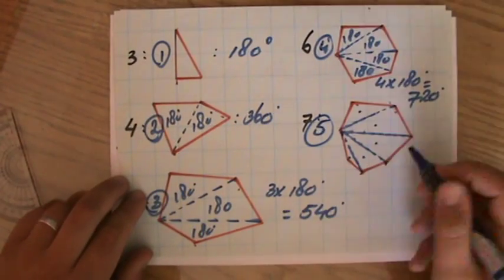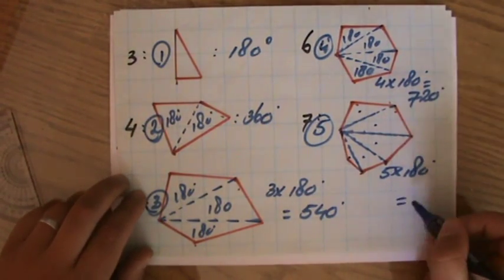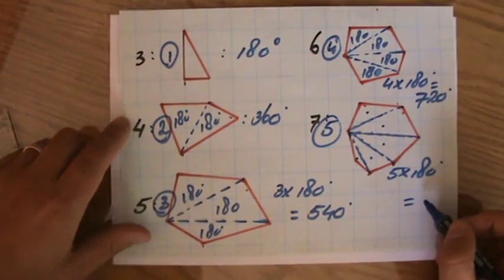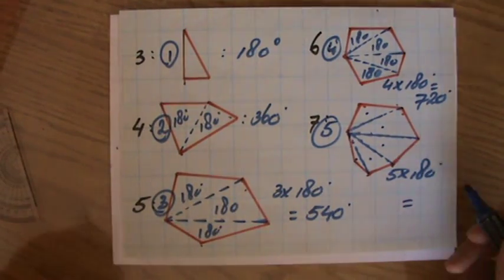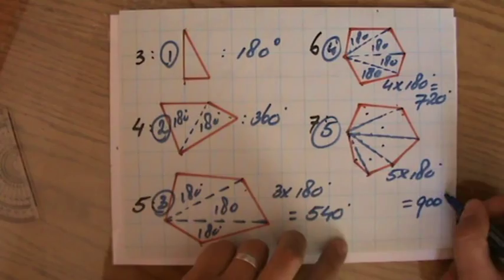So the heptagon will have five times 180 degrees to divide, which is 900 degrees.